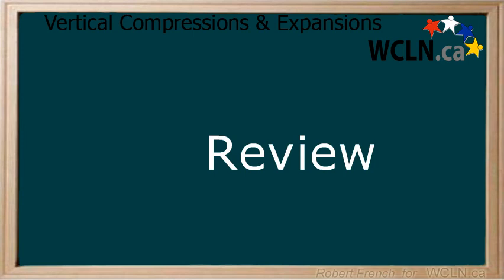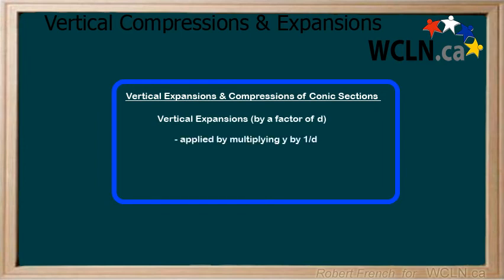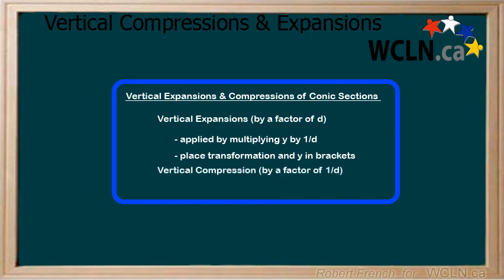In this lesson, you learned about vertical compressions and expansions of conic sections. For a vertical expansion by a factor of d, you multiply y by 1 over d, remembering to put the factor being multiplied and y in brackets. You also learned that for a vertical compression by a factor of 1 over d, you multiply y by d. These rules apply to all of the conic sections.